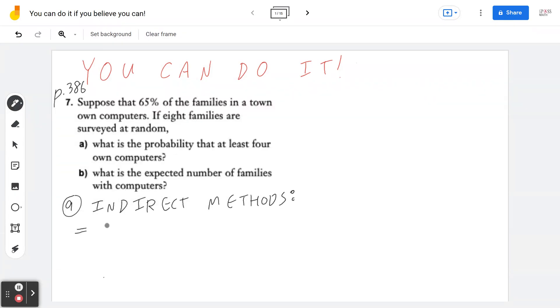Now, indirect method means you take all combinations, which we define as 100% or 1, minus the opposite of at least 4 own computers. So this means you're taking the probability of x less or equal to 3. This means you're going to take 1 minus p of 0, minus p of 1, minus p of 2, minus p of 3.